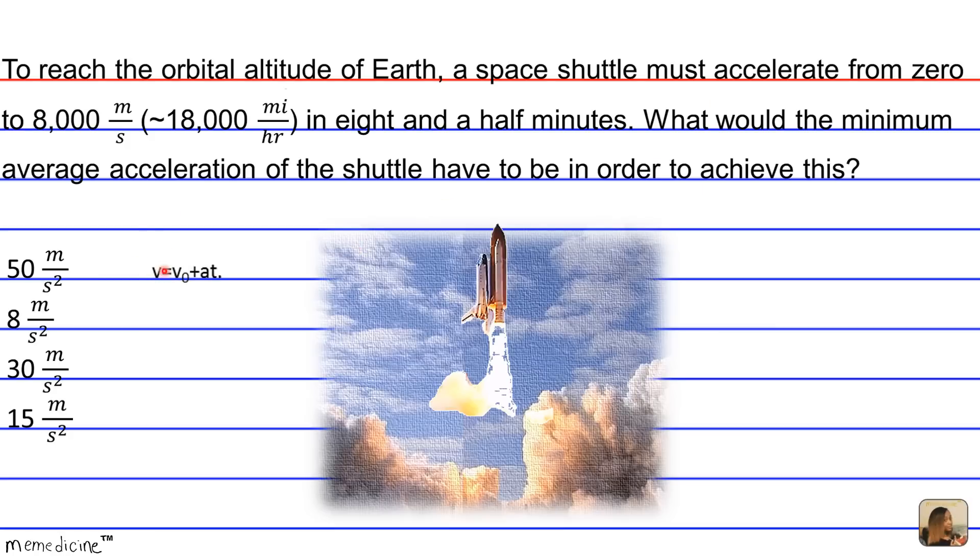V, where V represents the final velocity, equals V0 plus AT. And there goes our average acceleration held within this formula.